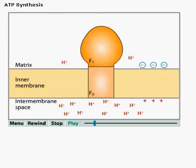The proton motive force established by the electron transport chain allows protons to flow down their concentration gradient through the F0 complex. Proton movement releases energy, which is used to synthesize ATP.